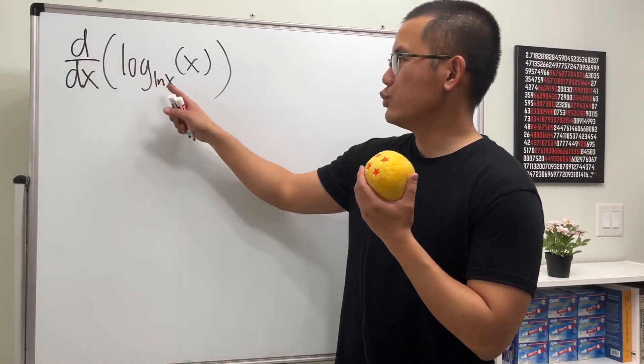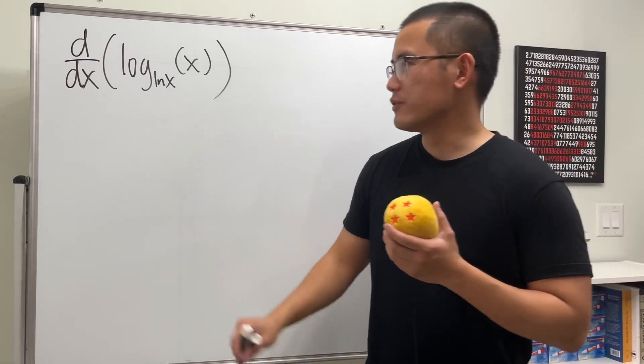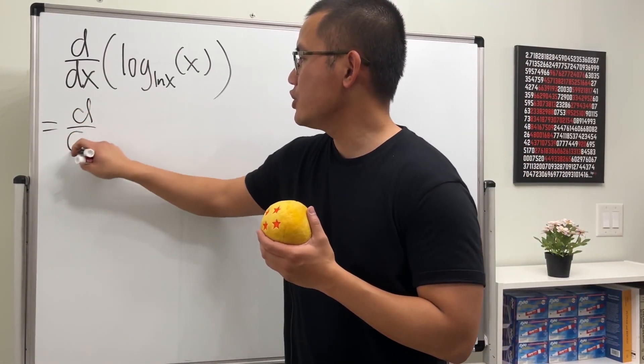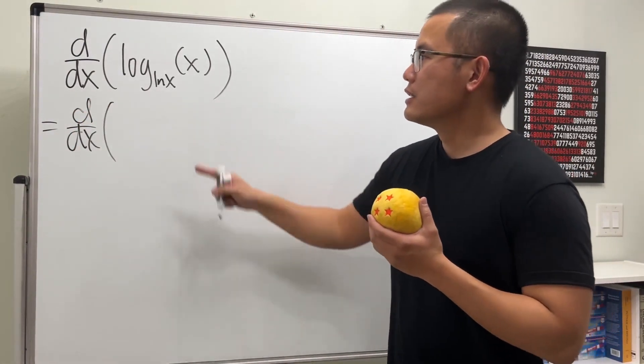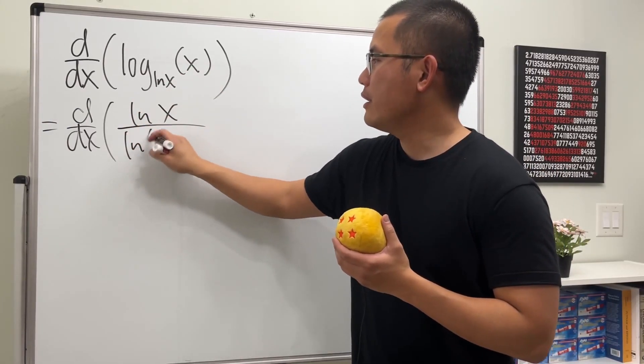Let's see how we can differentiate log base ln(x) of x. Check this out. First, let's use the change of base formula, so this is the same as differentiating ln of the input x over ln of the base, which